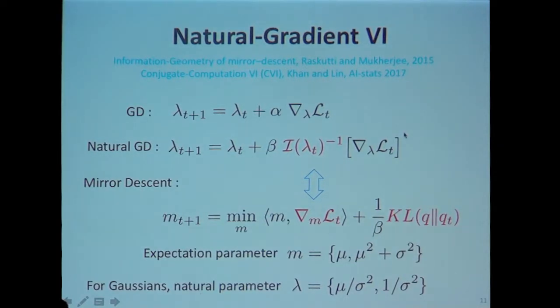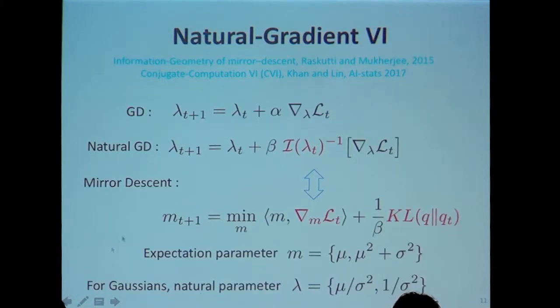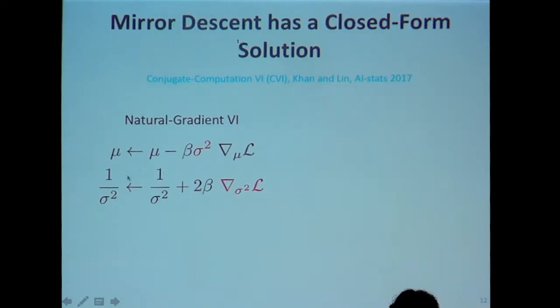Following that work, in our paper we showed that the mirror descent update is usually easier to write for exponential family distributions. The update for a Gaussian looks like this: you update the mean parameter, and the gradient is scaled by the variance parameter — like a Newton method where the covariance scales the gradient with respect to the mean. The second difference is that you update the precision parameter rather than the variance parameter.